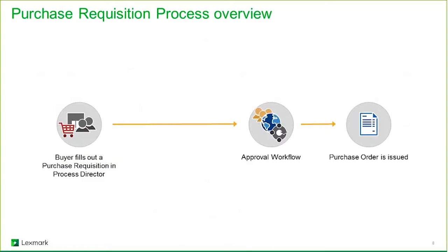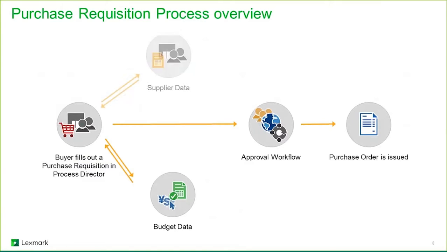The requisition process begins with the buyer filling out a purchase requisition in Process Director. The solution is integrated with the SAP catalog or third-party catalogs to fill out the requisition with materials, as well as adding manual transactions such as consulting services. The requisition then has to be validated in terms of material content, approved, and finally the purchase order is issued.